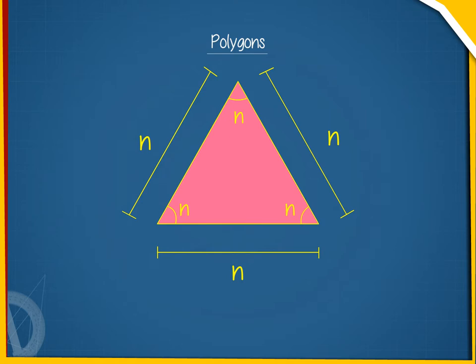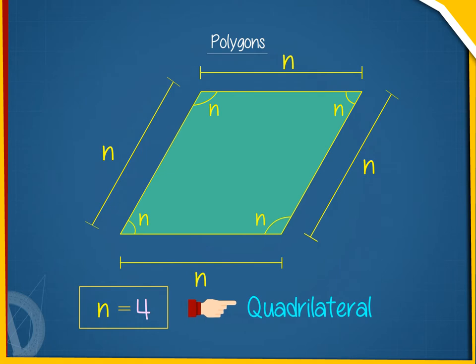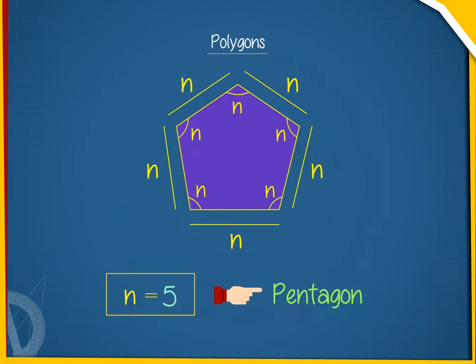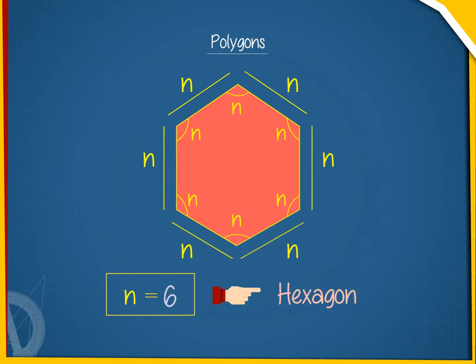A polygon with n equals to 3 is called a triangle, with n equals to 4, a quadrilateral, with n equals to 5, a pentagon, with n equals to 6, a hexagon, and so on.